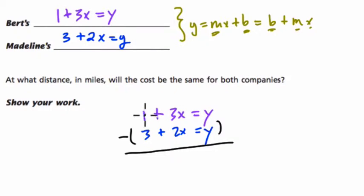Now when I subtract, I'm going to subtract 1 and 3, that's negative 2. 3X and 2X, that's X. Y minus Y is 0.